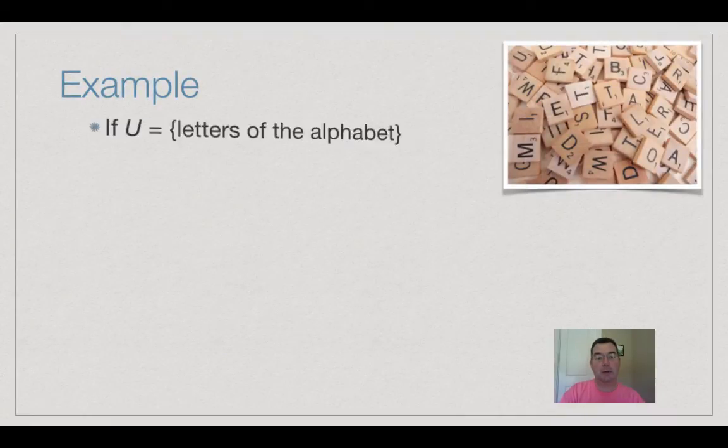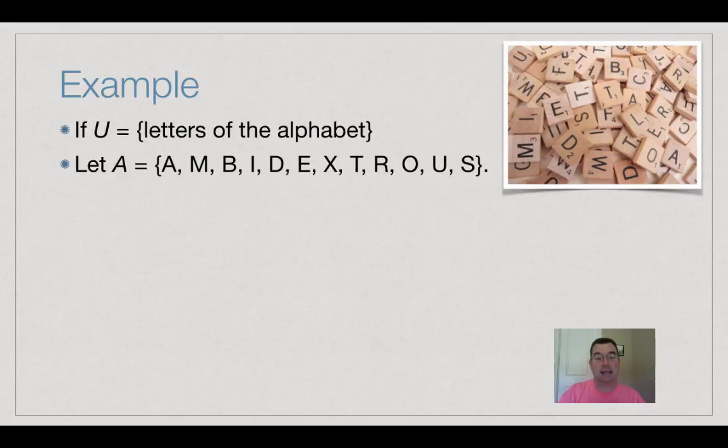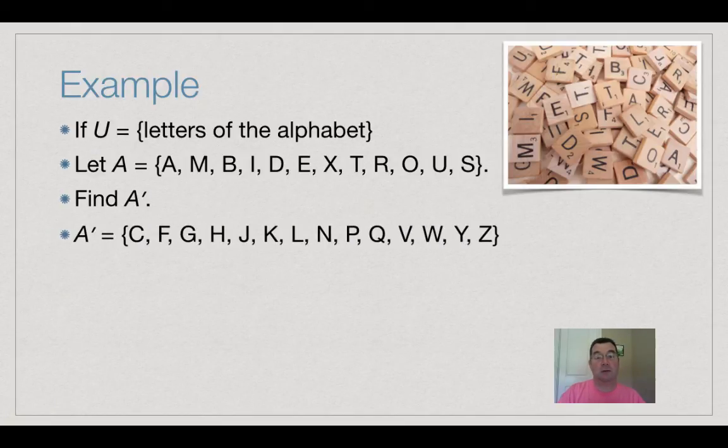So another example, let's let U equal the letters of the alphabet and let's let set A be the set of letters in the word ambidextrous. That means that A' would be all of those letters that are not in the word ambidextrous and they're listed there.